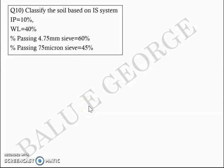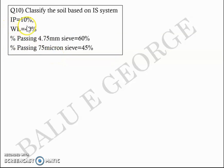The next question asks you to classify the soil based on the Indian Standard system. The data given is: plasticity index IP = 10%, liquid limit = 40%, percentage passing 4.75 mm sieve = 60%, and percentage passing 75 micron sieve = 45%.